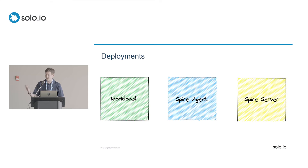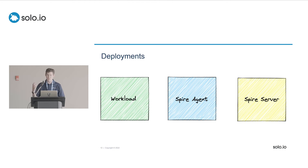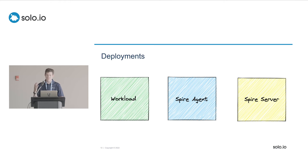When deployed in an environment, you'll have your workloads — the actual services needing identities — you'll have a SPIRE agent, and you need one of those on every single node you're running on. What a node means depends on your deployment architecture, but in Kubernetes it's literally just a Kubernetes node. Then a SPIRE server is the central authority that manages all identities and handles the registry of all workloads you're authorized to issue identities for.